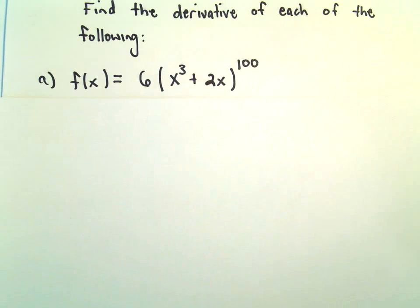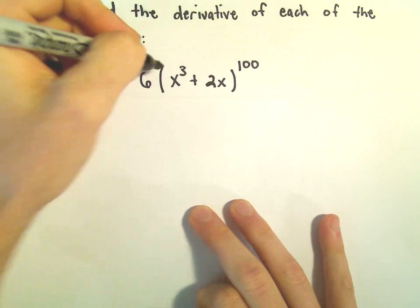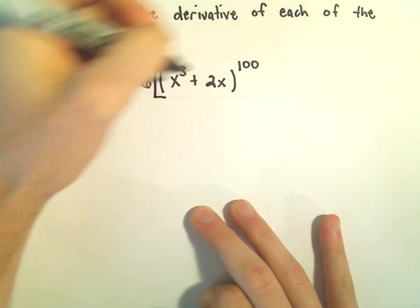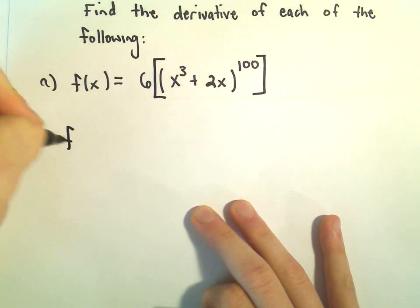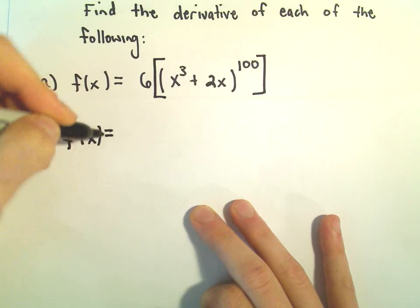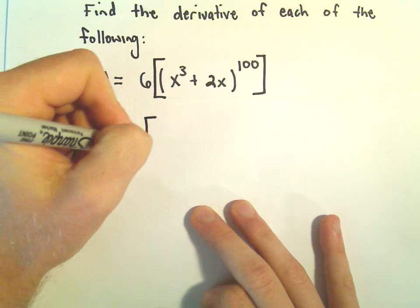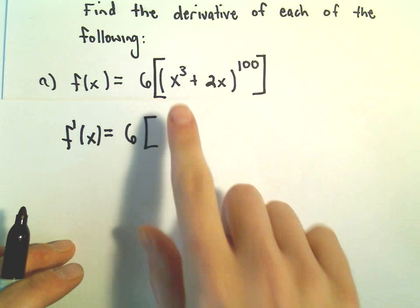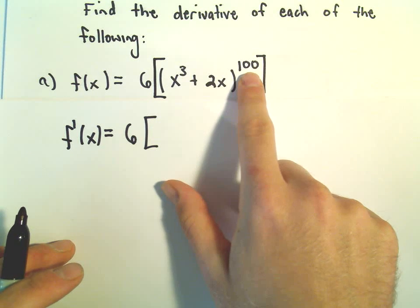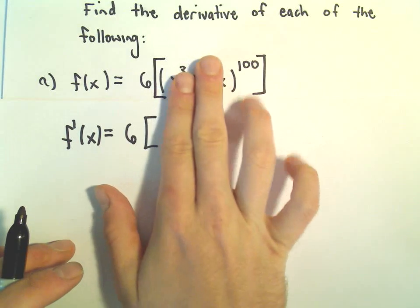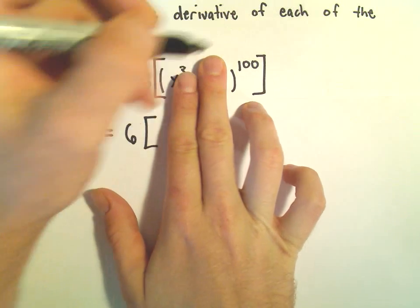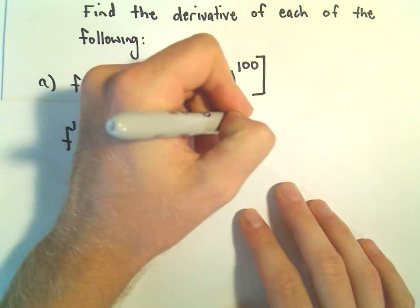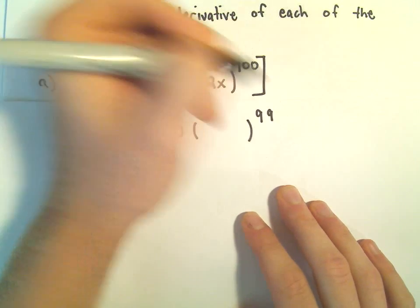Alright, it's kind of like before. The 6 when we take the derivative is just going to come along, and then we can multiply by the derivative at the end. The way I think about it is I kind of start from the most outside. To me, the thing on the most outside is this exponent of 100. And I think if I just had like x to the 100 power, I would get 100x to the 99 power.